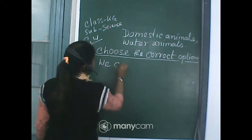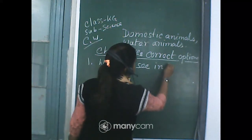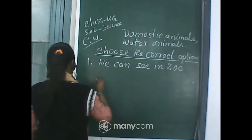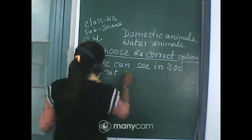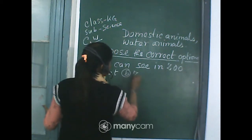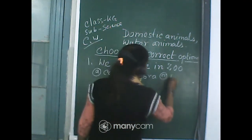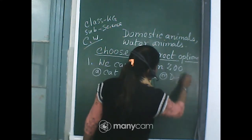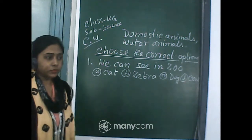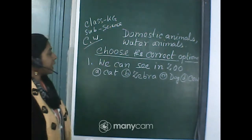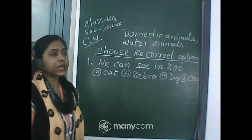Question 1: We can see which animal in the zoo? Option A: Cat. Option B: Zebra. Option C: Dog. Option D: Cow. Which one is the correct option?